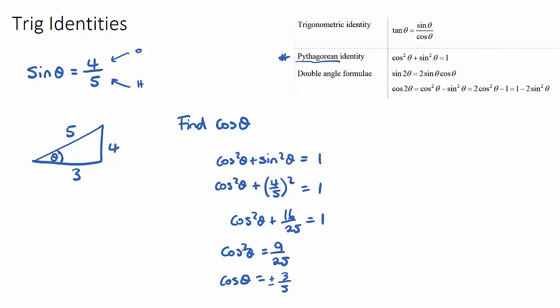And cos θ is just adjacent over hypotenuse, 3/5. So this formula that I put a star next to, this supports that if we get given sine or cos as a ratio, we can find the other just using the Pythagorean identity, or just drawing a triangle and using Pythagoras.